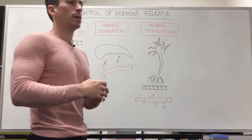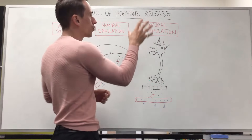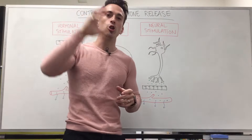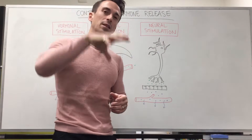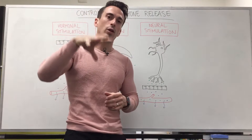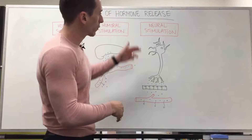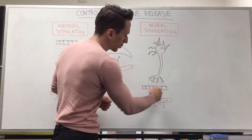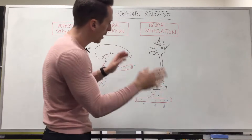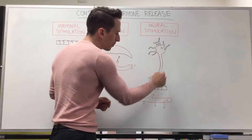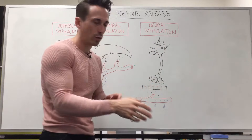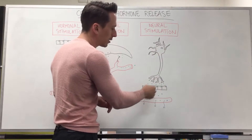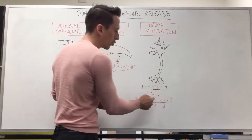The last type of stimulation is neural stimulation. This is where a neuron stimulates a cell or gland to release its hormone. The neuron must first release a neurotransmitter, which binds to receptors on the cell, causing it to release its hormone.